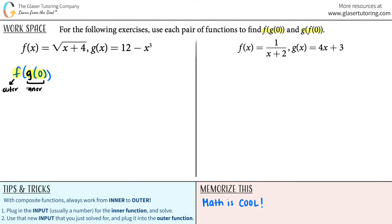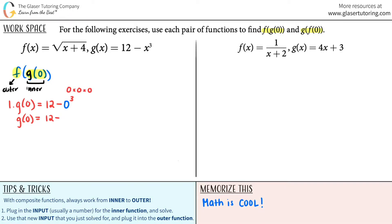Now all we have to do is plug it in. For the first part, we're going to plug in the input into the inner function and solve — inner always first. So I'll take my inner function g of zero. That means I go to the g function and anytime I see an x value, I plug in my number. So g of zero would be 12 minus zero cubed. Zero cubed is zero times zero times zero, which is zero. So 12 minus zero is just 12. g of zero equals 12.